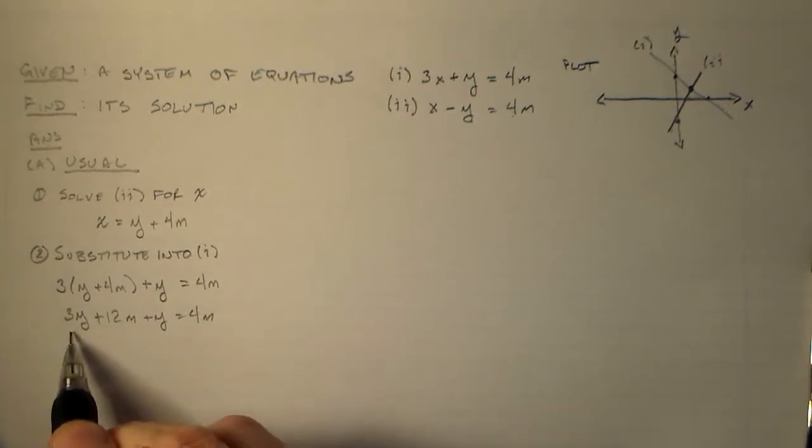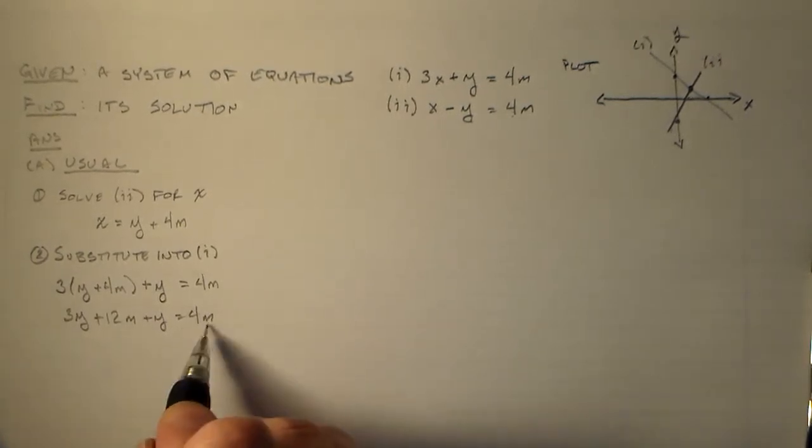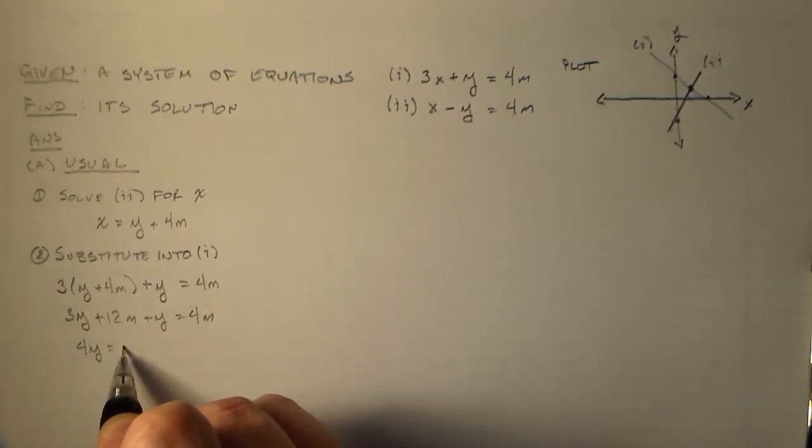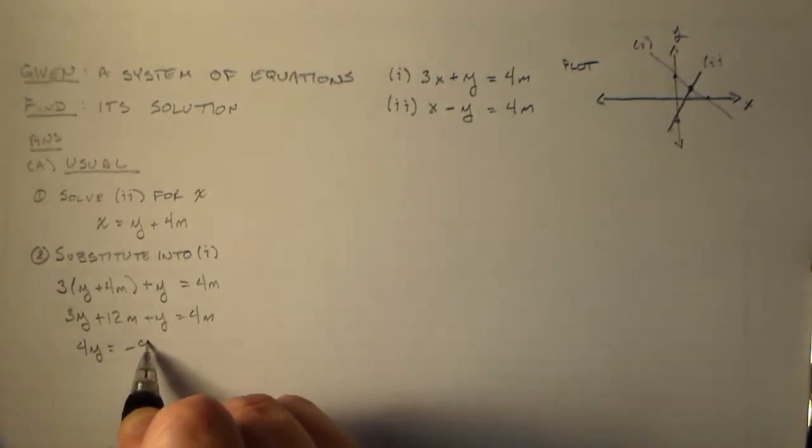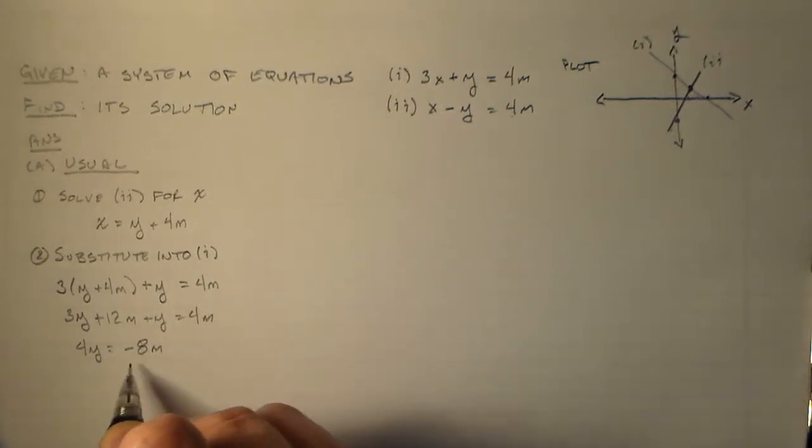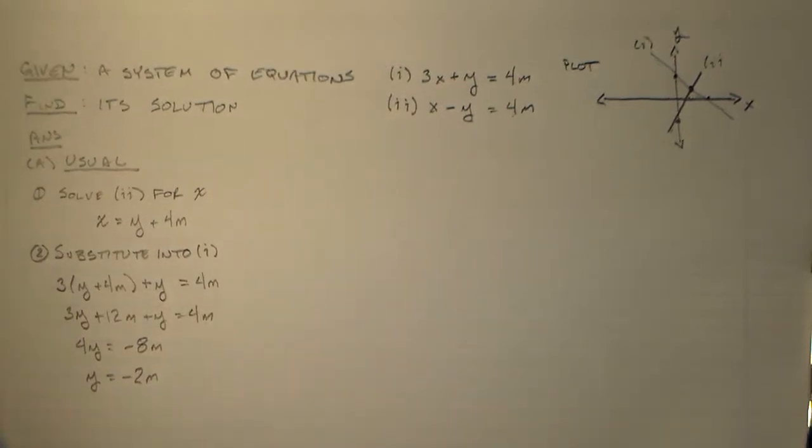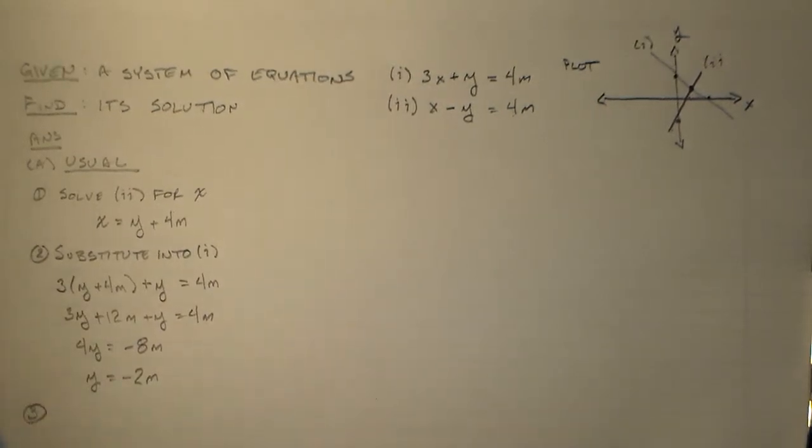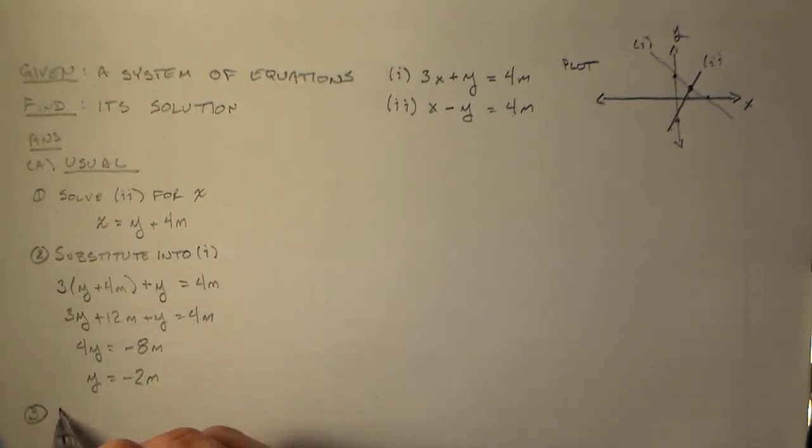So we get all the y's on one side and all the lengths on the other. So we have 4y equals minus 8 meters. So then y equals minus 2 meters. And then after we've got the y there, we substitute that y back into the other equation, or actually either of the equations.